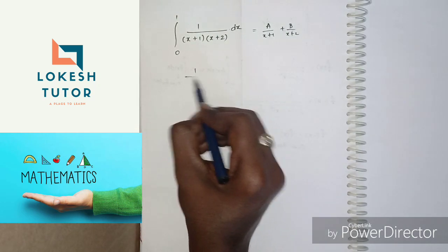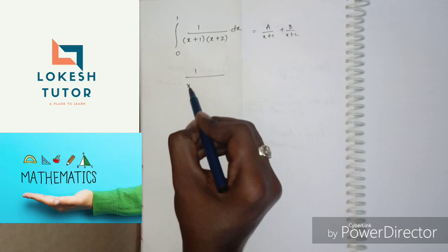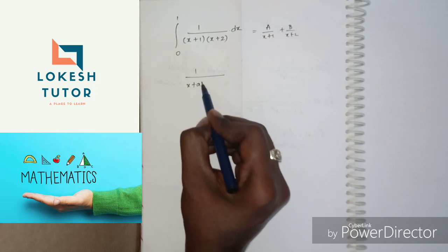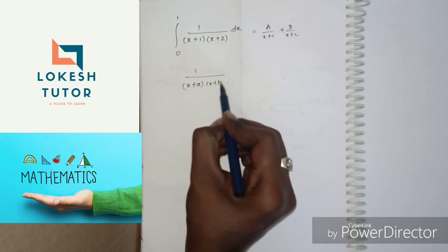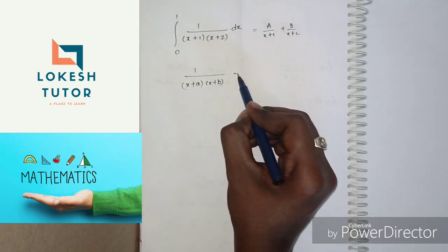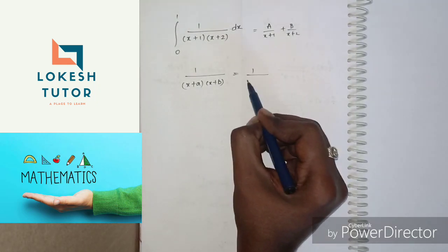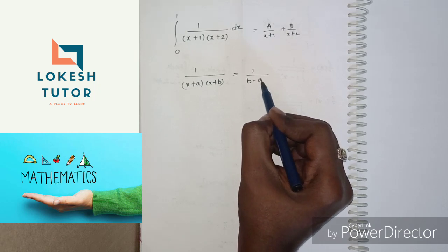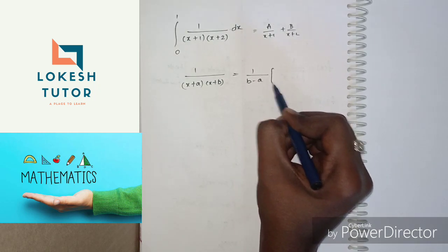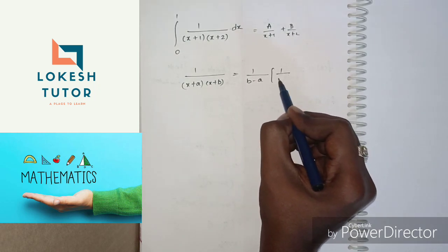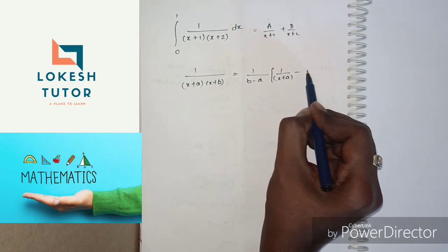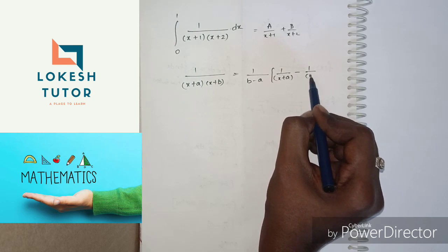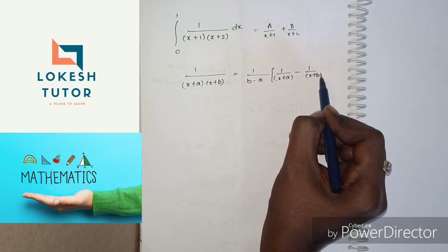We are going to use the formula: 1 by (x plus a) into (x plus b) can be written as 1 by (b minus a) into 1 by (x plus a) minus 1 by (x plus b).